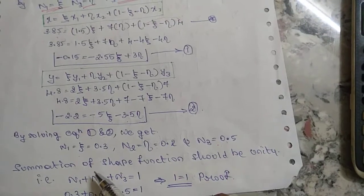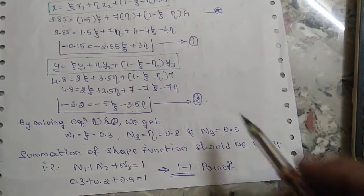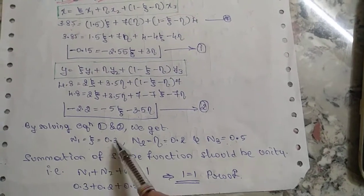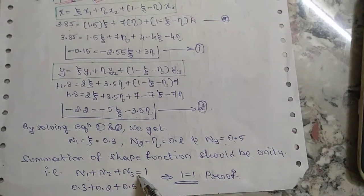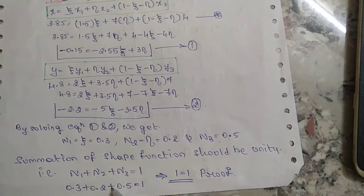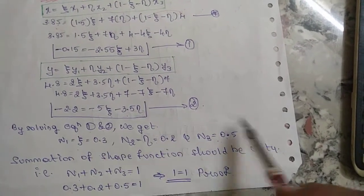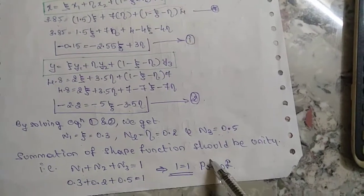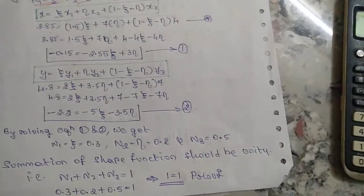Summation of shape functions should be unity - that is the condition given in the derivation. N1 + N2 + N3 = 1, so 0.3 + 0.2 + 0.5 = 1. The proof is that left-hand side equals right-hand side. Thank you.